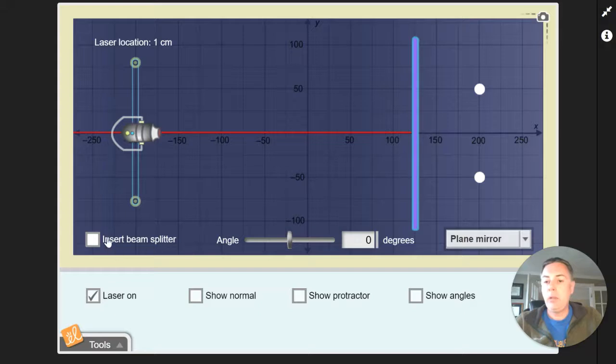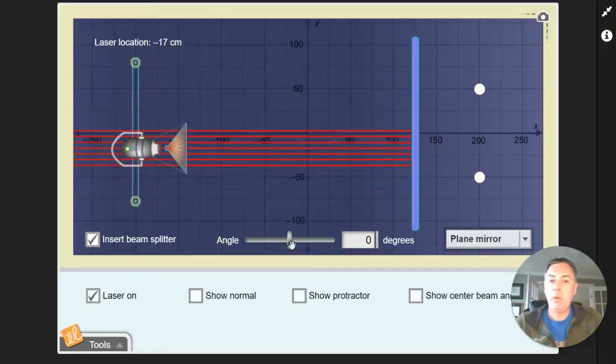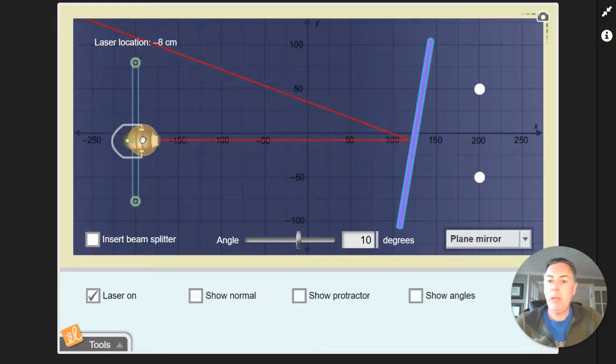You can also insert a beam splitter, and if we do that we end up with multiple rays that we can see. We can move this back and forth, and if we change our angle then you can really see the different beams that are moving.